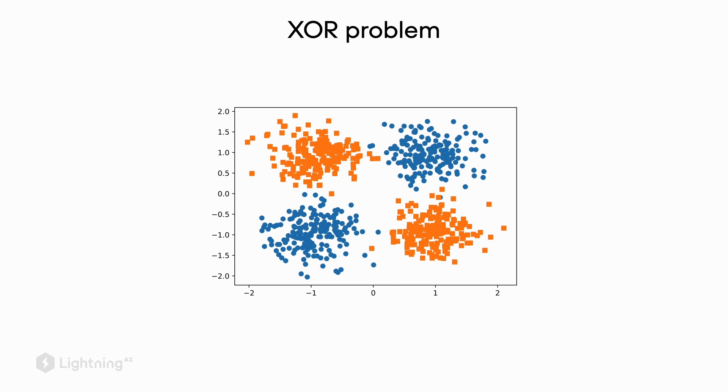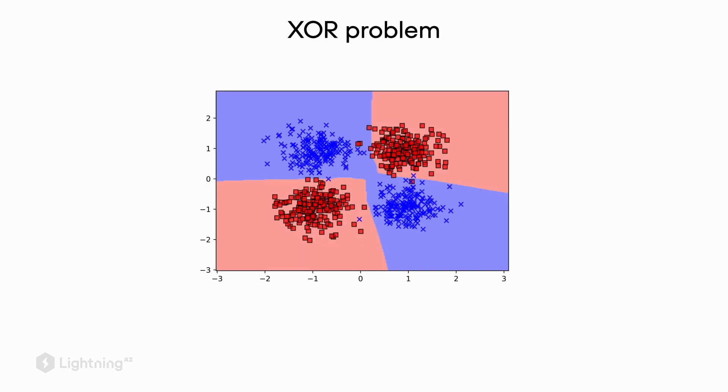Logistic regression is pretty much useless here. However, using a multi-layer perceptron, we can find decision boundaries where we can separate these two classes perfectly.